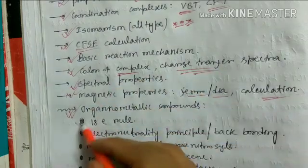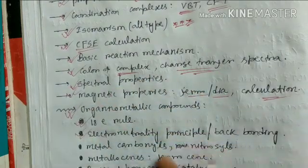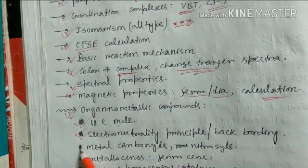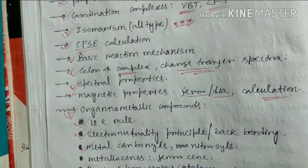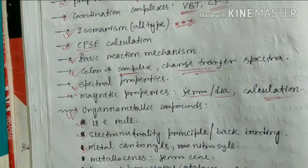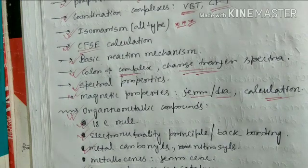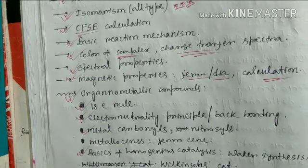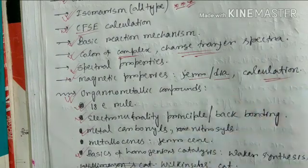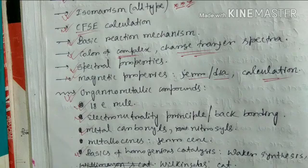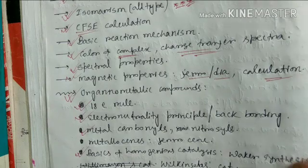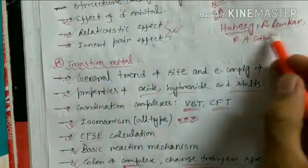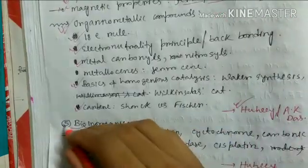For organometallic compounds, do the 18-electron rule — very important — the electroneutrality principle, and back bonding. Then metal carbonyls, metal nitrosyls, metallocenes, and specifically ferrocene: their properties, synthesis, and basic reactions. Also the basics of homogeneous catalysts like Wacker synthesis, Wilkinson's catalyst, and Ziegler-Natta catalyst — just basic ideas. Then Schrock carbenes and Fischer carbenes. You can read all these from Huheey or A.K. Das; R. Shriver is also good. For group chemistry, follow Huheey, R. Shriver, or F.A. Cotton.